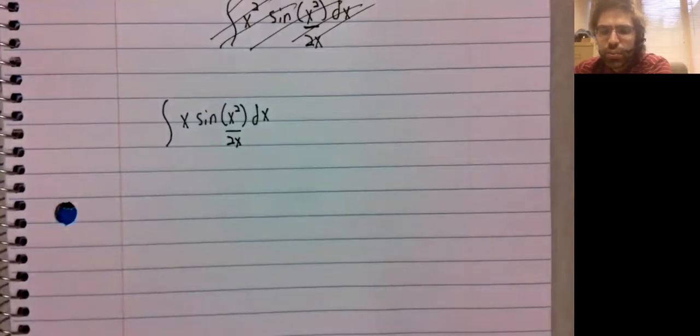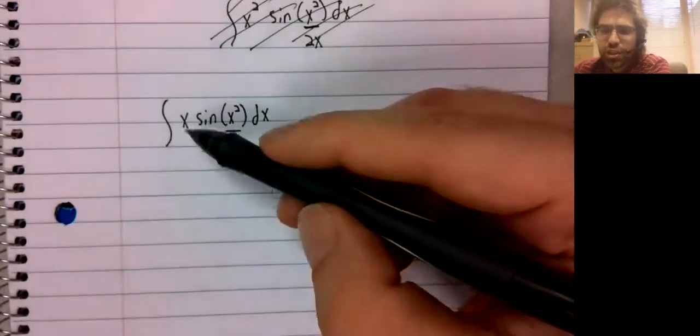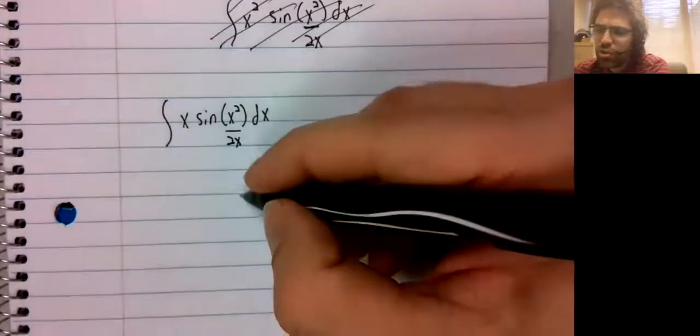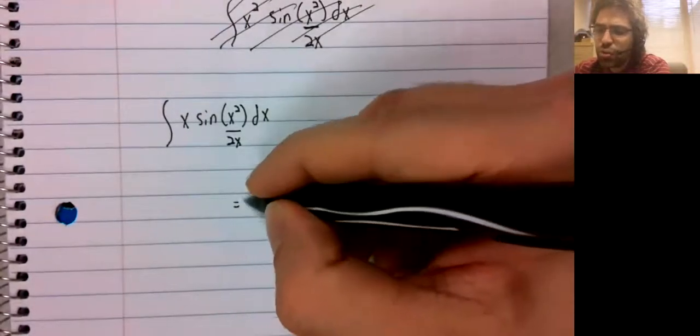And we don't quite have 2x, but we're really close. We've got the x, we're just missing a 2.